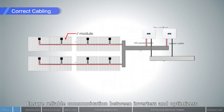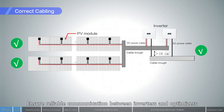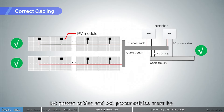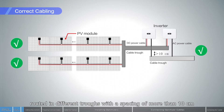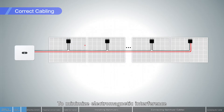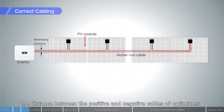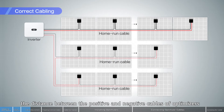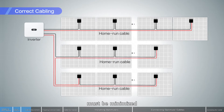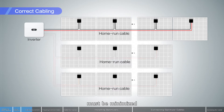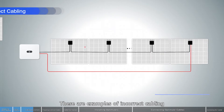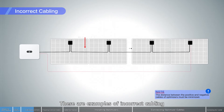Ensure reliable communication between inverters and optimizers. DC power cables and AC power cables must be routed in different troughs with a spacing of more than 10 cm to minimize electromagnetic interference. The distance between the positive and negative cables of optimizers must be minimized. These are examples of incorrect cabling.